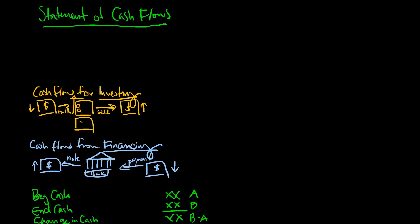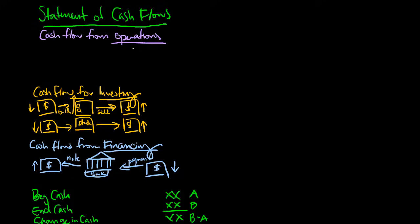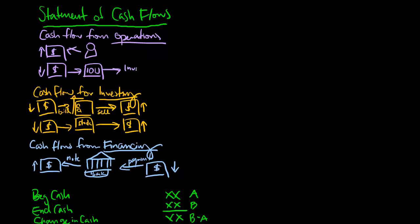We also sometimes get investments by purchasing stock in other companies. If we buy stock from other companies, our cash goes down; when we sell that stock, our cash goes up. Finally, the first section is our cash flows from operations — cash that we bring in, collect, and use during the normal course of our business. Cash will go up when customers pay us the money they owe us from their accounts receivable. Cash will go down when we pay off any payables or liabilities we have to other companies for inventory or expenses. Cash comes in when we collect it from customers; cash goes out when we pay off our creditors.